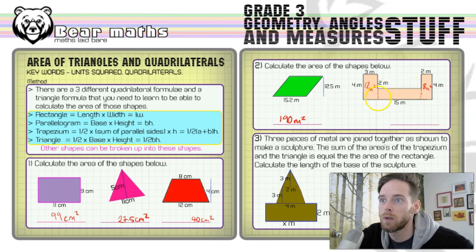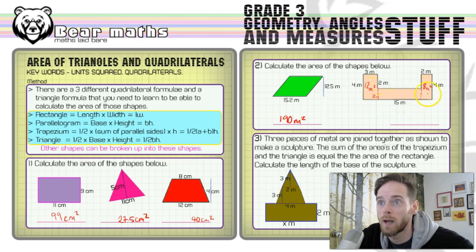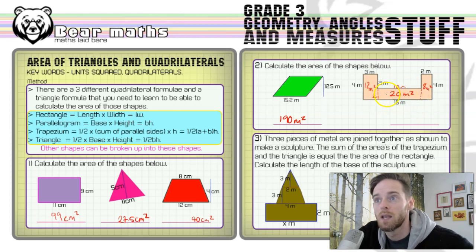For the third rectangle, the base is 15 meters total. We need to work out the missing lengths. We know the left section is 4 meters, the middle section is also 4 meters — that's halfway, so 2 meters — leaving 2 meters for the remainder. Taking 2 and 3 meters off 15 leaves 10 meters. So the third rectangle is 2 times 10, giving 20 meters squared.